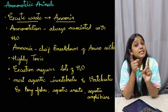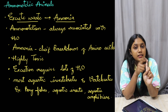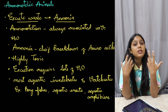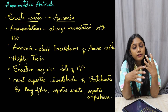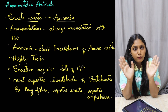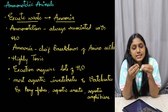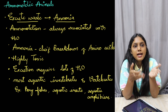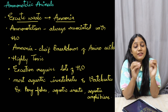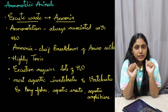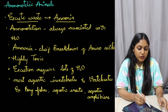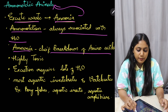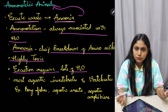Ammonia is highly toxic, so animals cannot retain it in their body. Secondly, it is soluble in water, so excreting ammonia requires lots and lots of water. Organisms that can excrete ammonia are those that have water availability and can afford to lose lots of water. Ammonotelism is always associated with water availability.